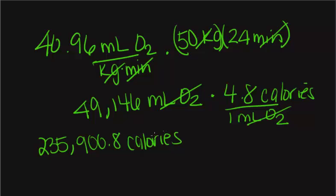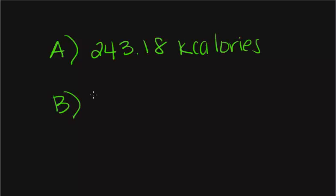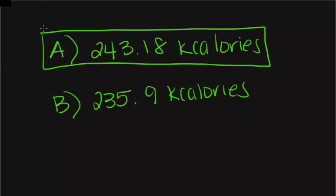If we convert this to kilocalories by dividing by 1,000, we get 235.9 kilocalories. Person A will burn 243.18 kilocalories while person B will burn 235.9 kilocalories. Therefore, person A will be the one to burn more calories.